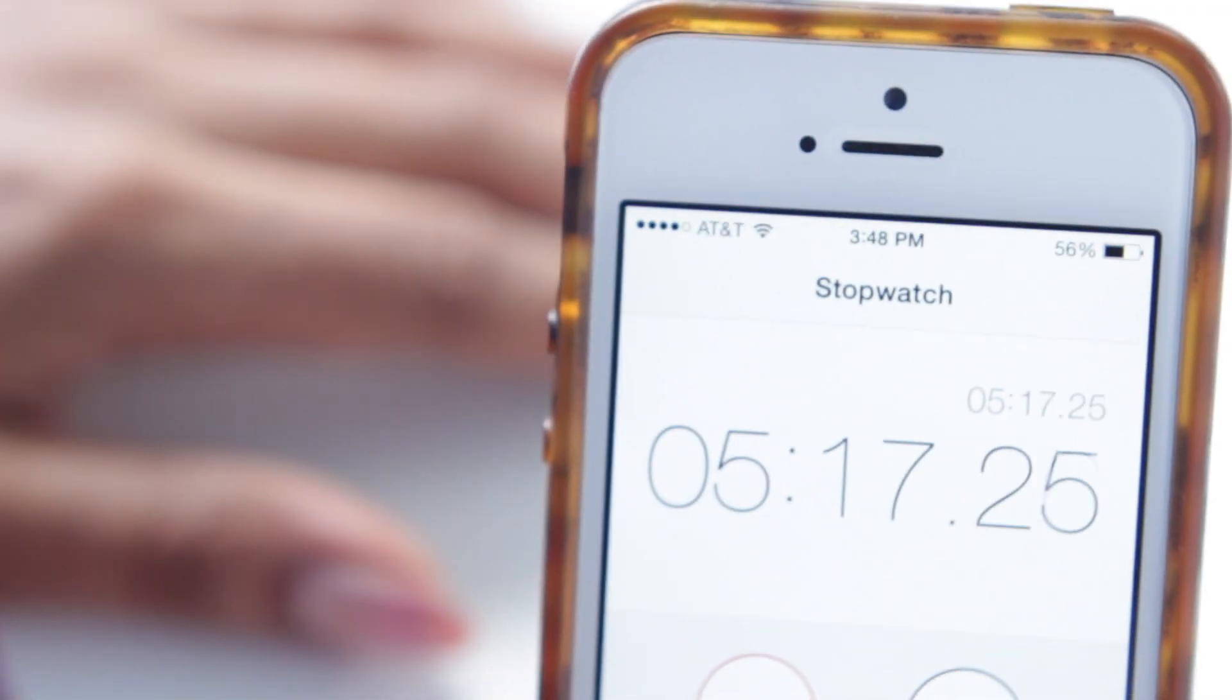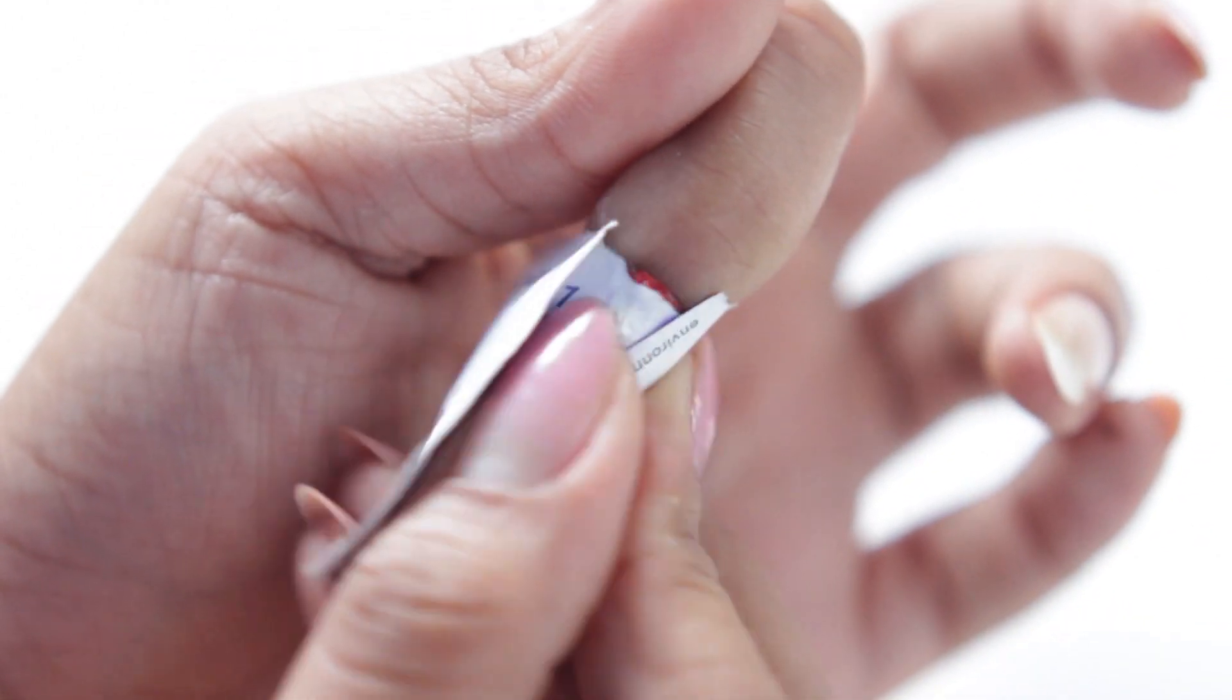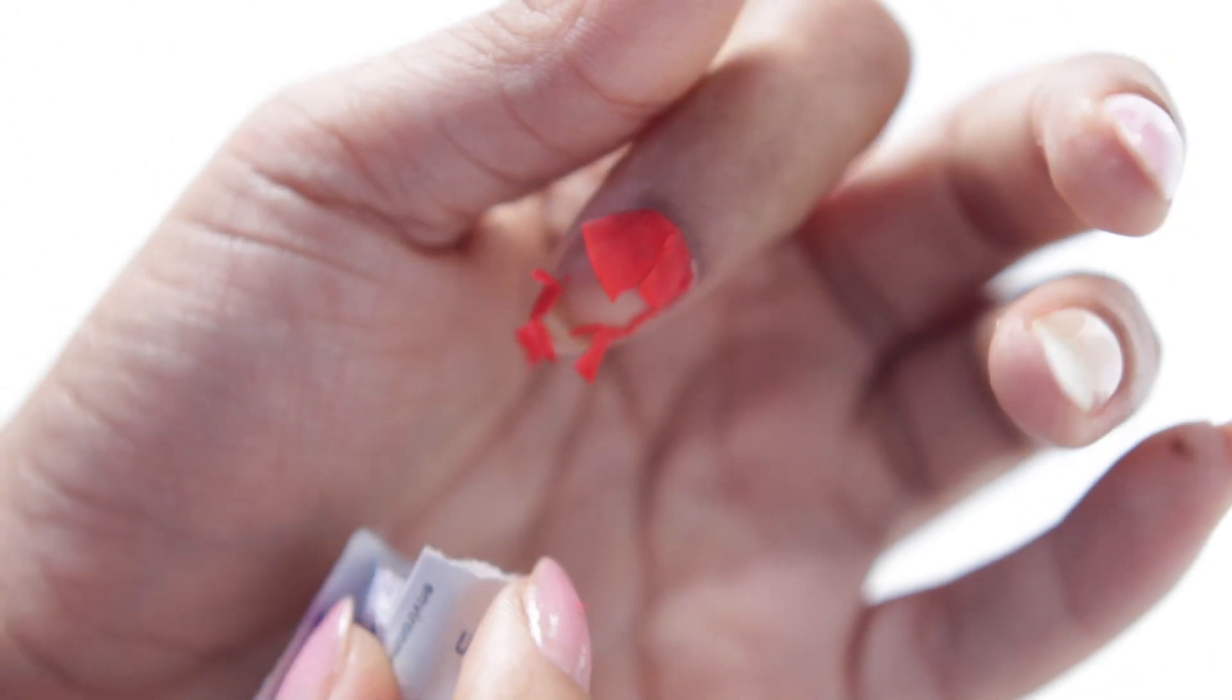So now I just basically leave that on for five minutes and this may differ depending on how long you've had your polish on as well as which brand you're using so always check their instructions. And as you can see a lot of the gel came off on its own which is what it should do.